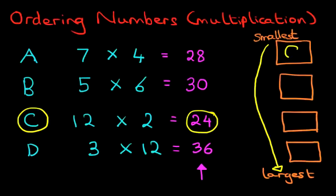So the top one there is C. We're now left with 28, 30, and 36. So which is the smallest out of these three? Well, the only one which begins with 2. That's 28, and that is A. So A comes next.